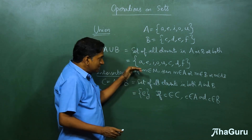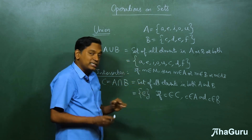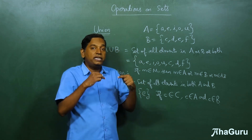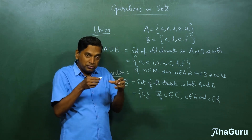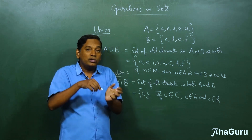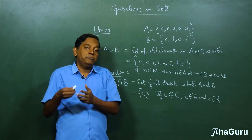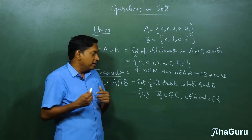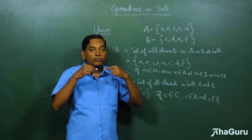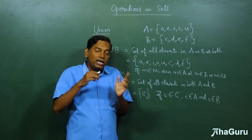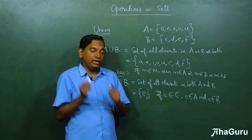So this is the definition of union and intersection, which are operations on sets. That means you take two sets, do something, and you get a result which is also a set — it's like addition or subtraction in arithmetic. One way to understand union and intersection is what is known as the Venn diagram.